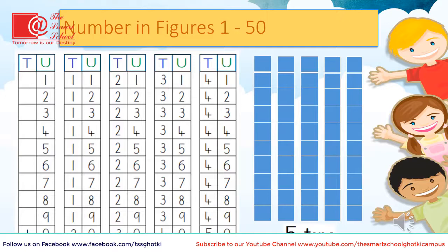Bravo! You can count numbers 1 till 50. Now tell me how many tens you can see. Very well done — we can see five bars, which means five tens. Good students. Now I hope you can count numbers 1 till 50 with correct sequence.